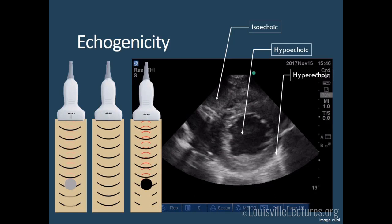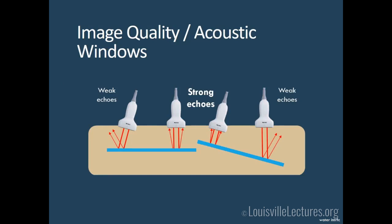The ultrasound probe will only get a good image if waves are bouncing back to the transducer. When waves bounce back completely, you get strong echoes and a clear image. Waves bouncing at an angle return weaker signals, producing a weaker image. Two things optimize your image: eliminating artifact and using fine movements with your probe so most sound waves bounce back onto it.